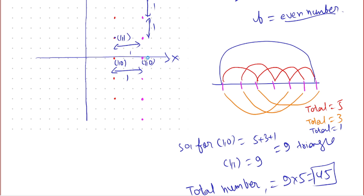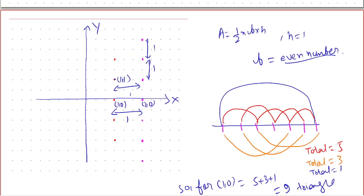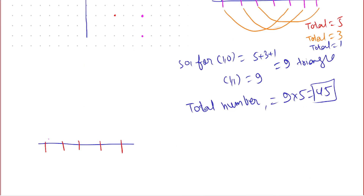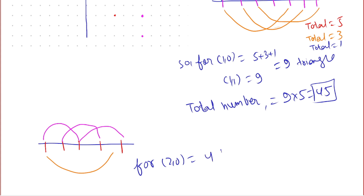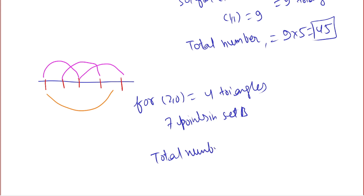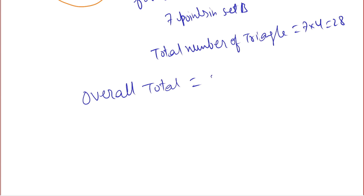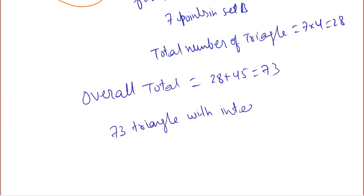Now computing from Set B: we take 1 point from Set B and 2 points from Set A (5 points on the number line). For a gap of 1 there are 3 pairs, and for a gap of 3 there is 1 pair, giving 4 triangles per Set B point. With 7 points in Set B, total triangles from Set B = 7 × 4 = 28. The overall total is 28 + 45 = 73. So there are 73 triangles with integer area.